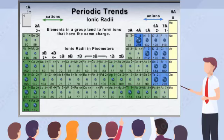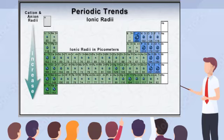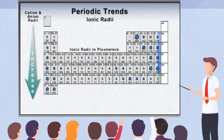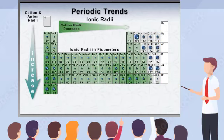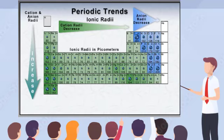For the elements that form ions, ionic radii generally increase moving down a group, as the increased number of electrons fill orbitals that extend farther from the nucleus. Moving from left to right across a period, the ionic radii of cations gradually decrease from group 1A moving toward the right, but starting with groups 4A and 5A, these elements form anions that are much larger than the cations, and these anions also gradually decrease in size moving toward the right.